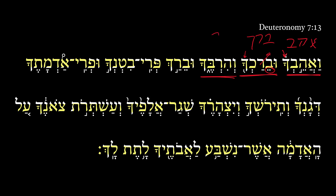Here we have the root ravav, and it's in the hifil. The dagesh here comes from the geminate root — this one jumps in as the dagesh. And then we have the 2MS suffix here, so we have a hifil perfect 3MS. And he will love you, and he will bless you, and he will make you many.